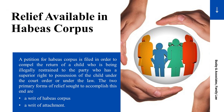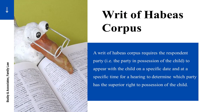The relief available under habeas corpus — how do these hearings procedurally play out? A petition for habeas corpus is filed to compel the return of a child who is being illegally restrained to the party who has a superior right to possession under a court order or by virtue of parentage. The two primary forms of relief are the writ of habeas corpus and also what's called a writ of attachment. When you file the writ of habeas corpus, you do not file that writ and then call the police and automatically go to someone's residence or school and get the child.